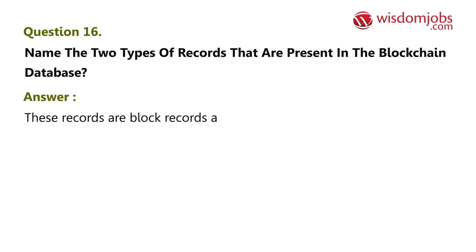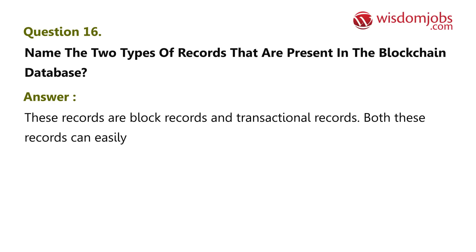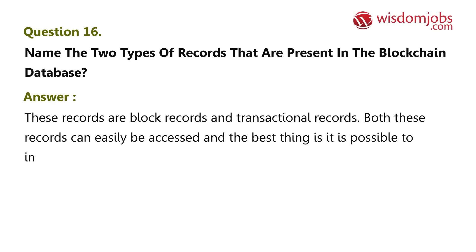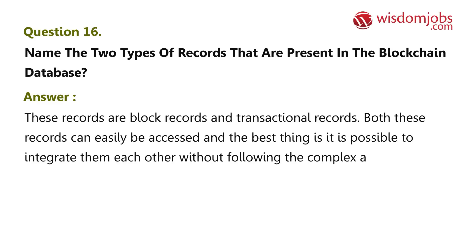Question 16: Name the two types of records present in the blockchain database. Answer: These records are block records and transactional records. Both these records can easily be accessed, and the best thing is it is possible to integrate them with each other without following complex algorithms.